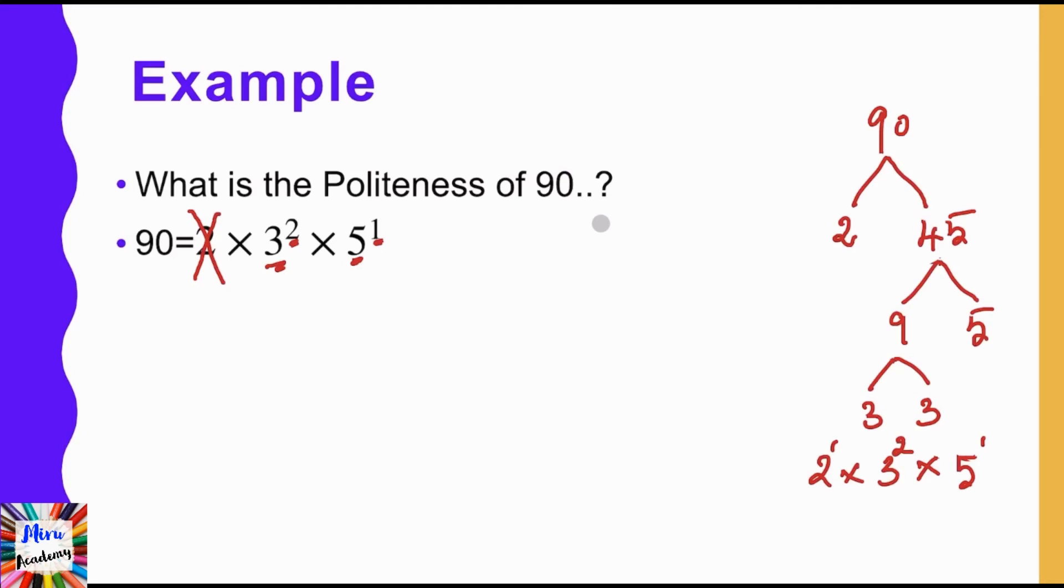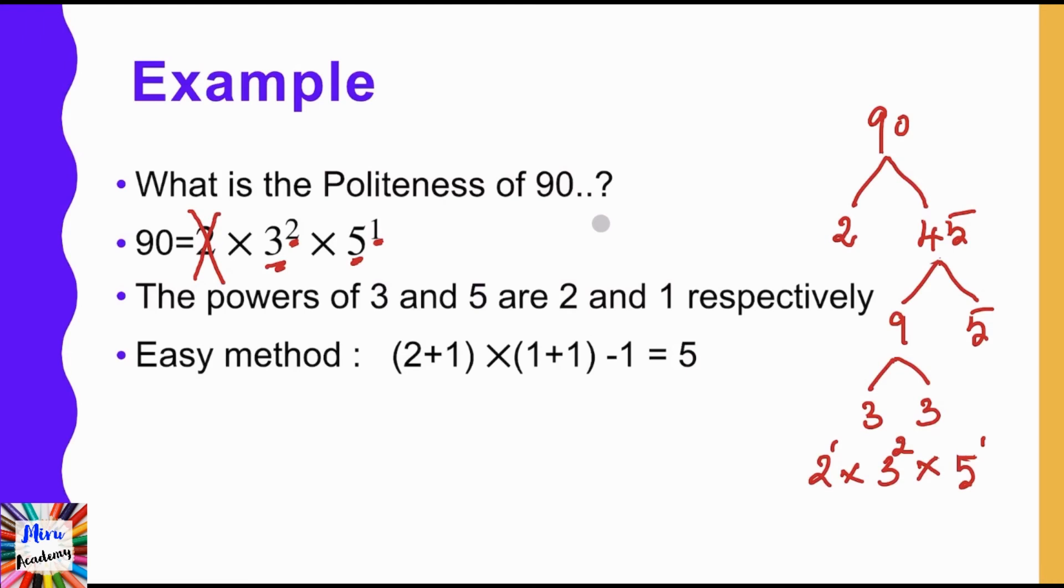So you have to add 1 with 2, so that is 2 + 1, and then we have to take the other power, 1 + 1. So 2 + 1 is 3 and 1 + 1 is 2. So you get 3 × 2 is 6. 6 - 1 is 5. So the politeness of the number 90 is 5. This is how we can calculate the politeness easily.